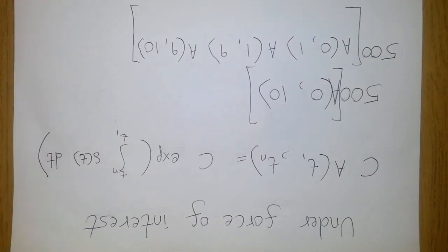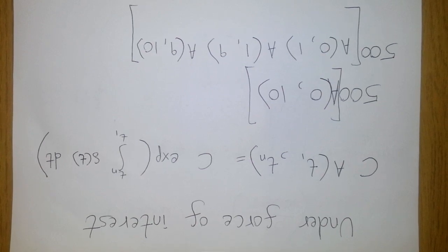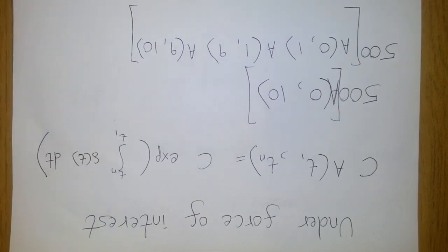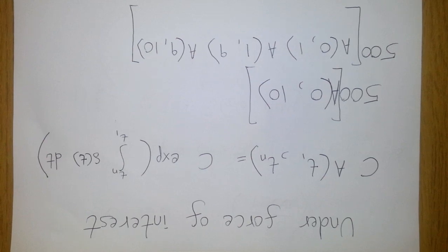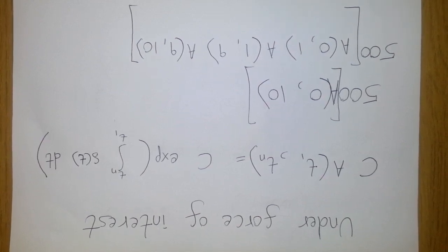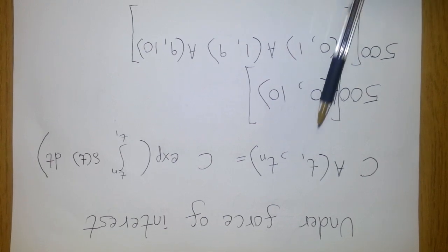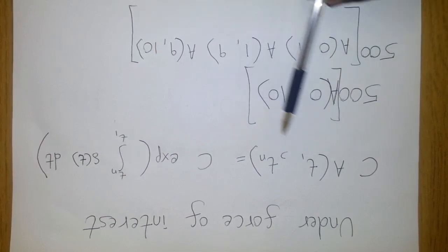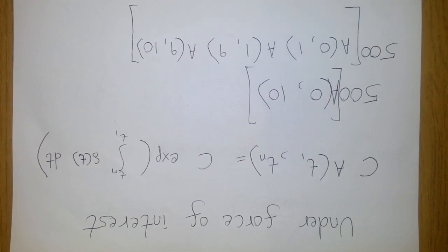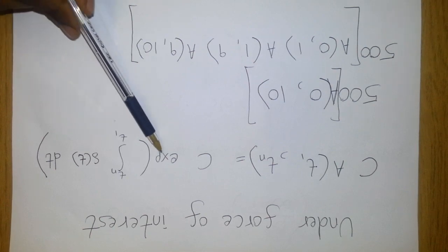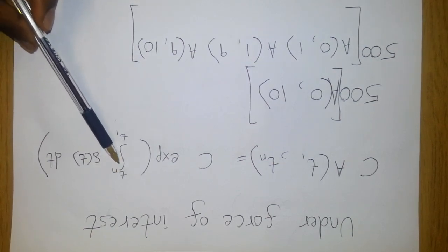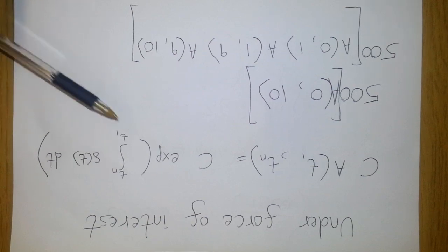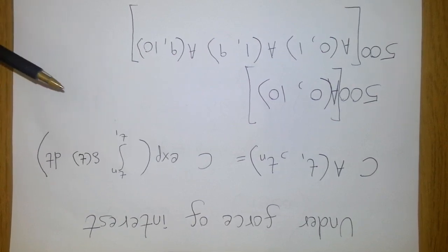Under the force of interest, your accumulation factor is given by the exponential of the integral of Delta. If you are asked to accumulate an amount C over a time period from t1 to tn, you multiply C by this accumulation factor — that is, the exponential of the integral of the force of interest over the period t1 to tn. In our example, we integrate the force of interest over the period 0 to 10.